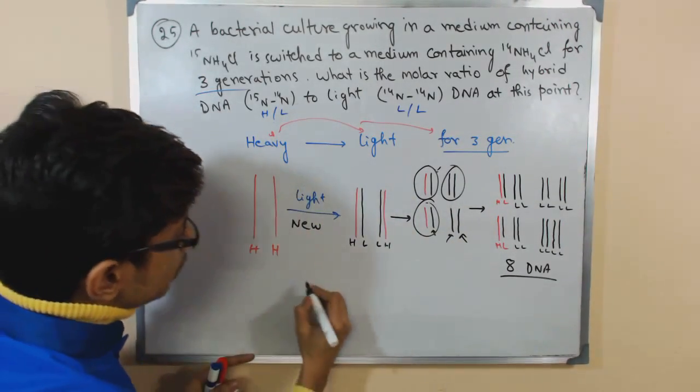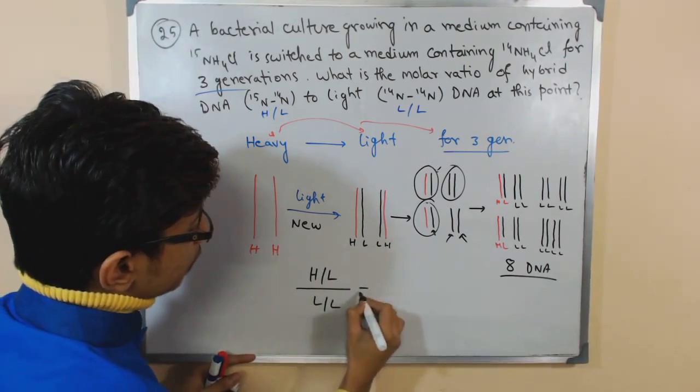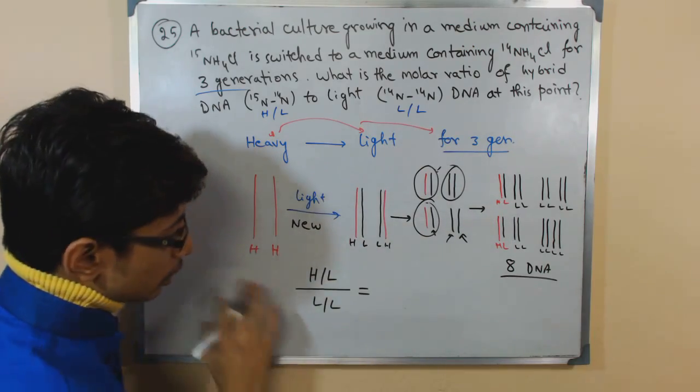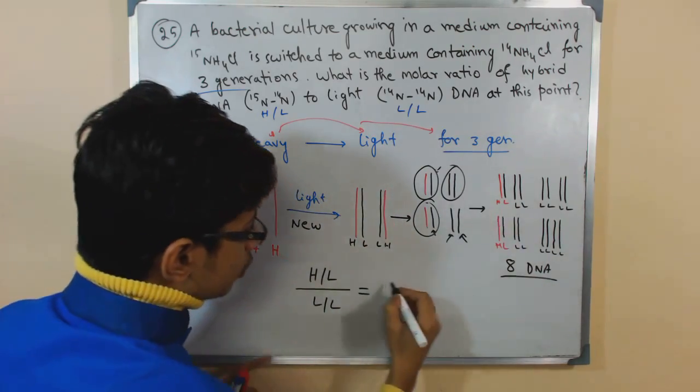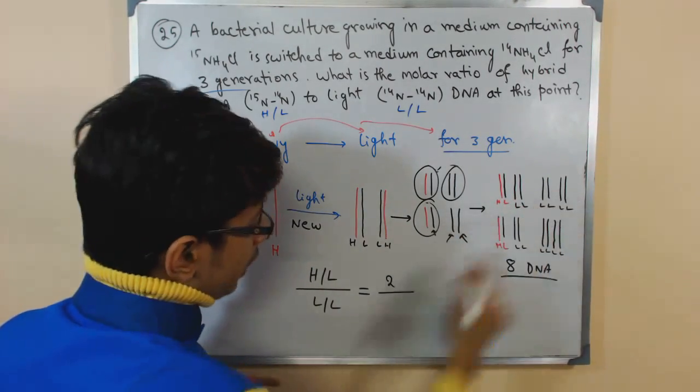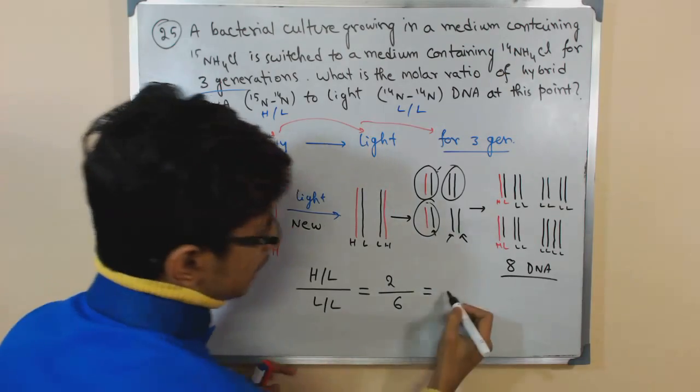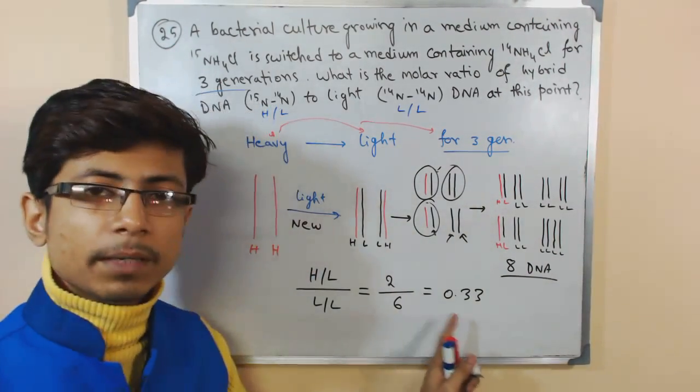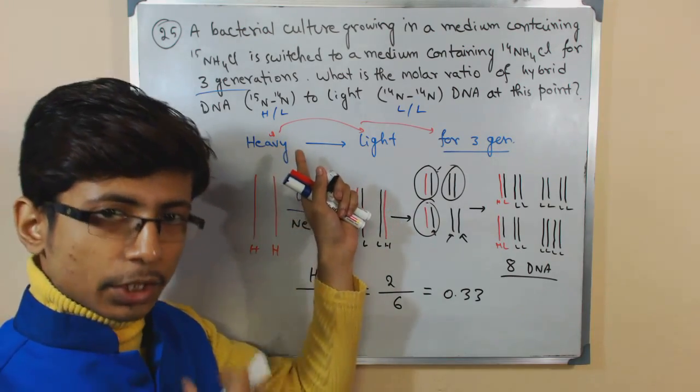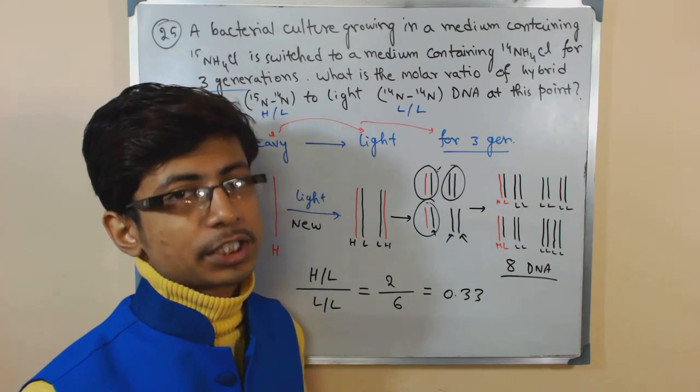So ultimately if we put the ratio of heavy-light by light-light, what will be the number? Because that's how we calculate molar ratio. The total content of heavy-light is 2 divided by the light-light that is 6. We get the value of 1 by 3, that means 0.33. So this will be the molar ratio of heavy-light, that is the hybrid, to light DNA at this point after 3 replications.